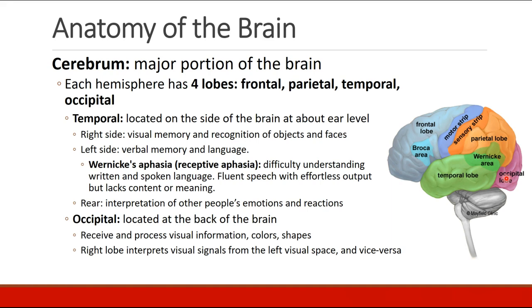Near the rear of the temporal lobe are the controls for interpretation of other people's emotions and reactions. Finally, the occipital lobe, located at the back of the brain, receives and processes visual information, colors, and shapes. The right side interprets visual signals from the left visual space, and vice versa.